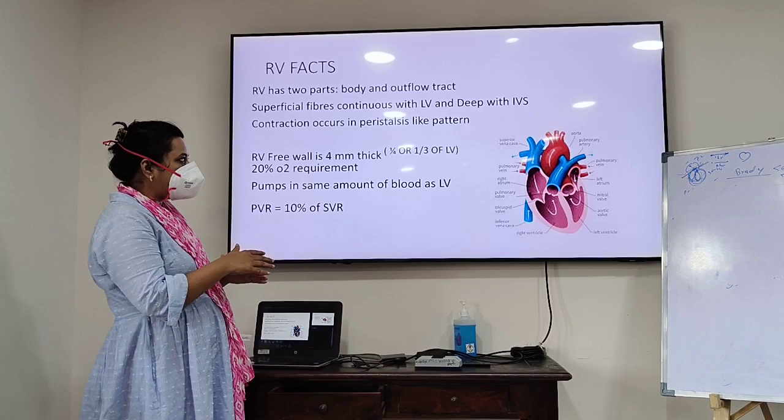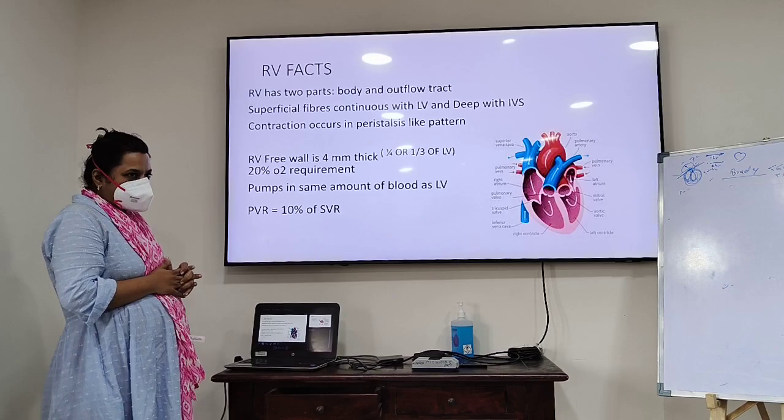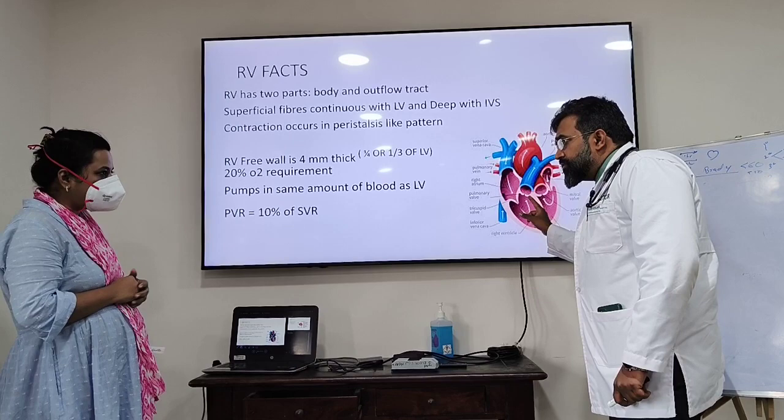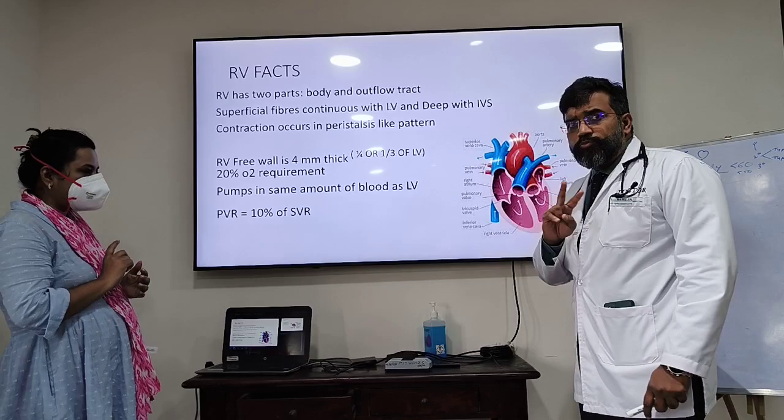The RV has superficial fibres which are continuous with the left ventricle and deep fibres which are continuous with the interventricular septum. I would actually change this to say three parts. So the RV has three parts — it's not two parts, it's three parts.